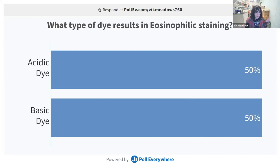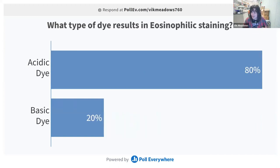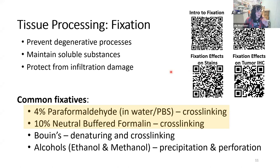For our poll: what type of dye results in eosinophilic staining? It was about 50/50 at first, but the answer is that eosinophilic staining results from acidic dyes — something like eosin. Thank you for participating.